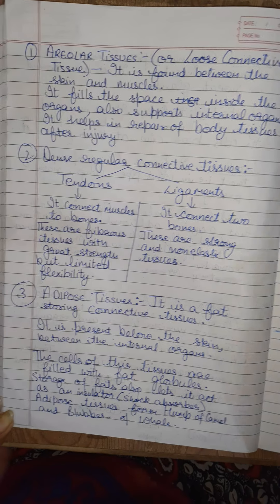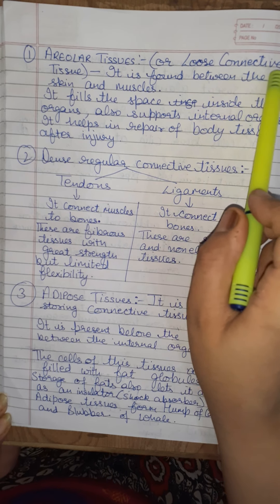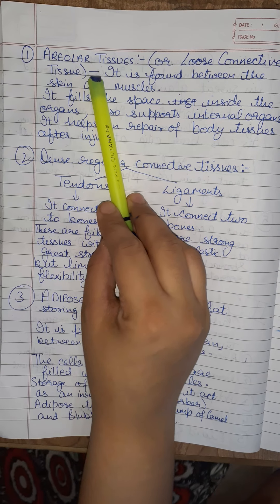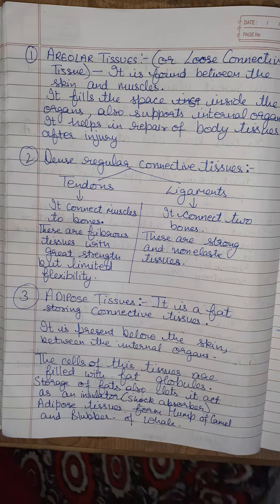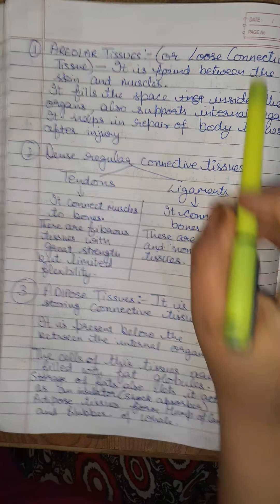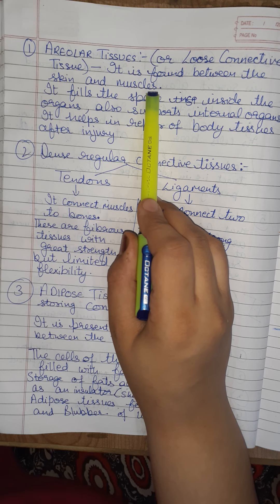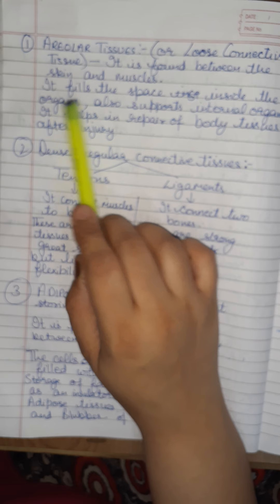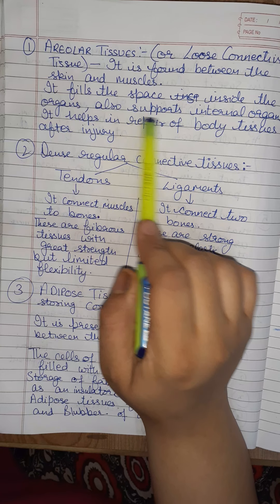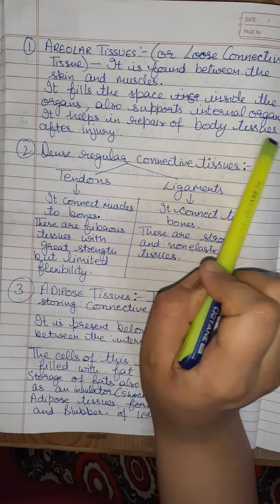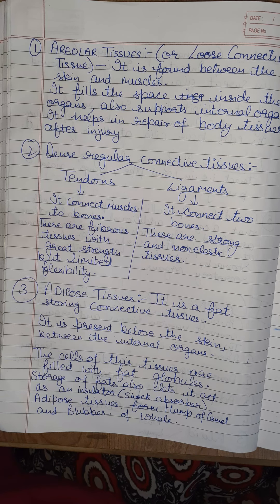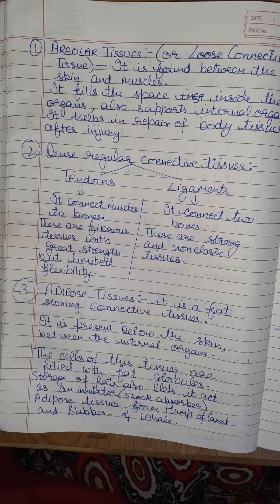Areolar tissues are also known as loose connective tissues — they have a very loose matrix. Areolar tissue is found between the skin and muscles, fills the space inside organs, and supports internal organs. It helps in the repair of body tissues after injury — if there is a cut on the skin or something is broken, areolar tissue plays an important role.